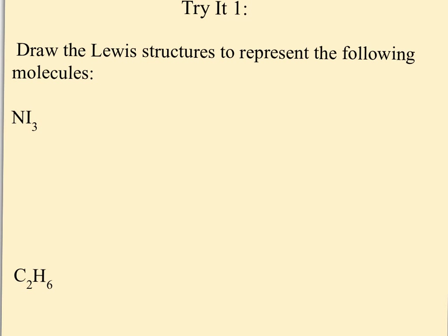Here are a couple to try: NI3 and C2H6. The first element is typically your center atom, but if the first element is hydrogen, it can't be in the center because it can only form one bond. For NI3, nitrogen has five valence electrons in group 5A, and each of the three iodines has seven valence electrons. Nitrogen goes in the center with its five electrons, and iodine has its seven valence electrons arranged around it.